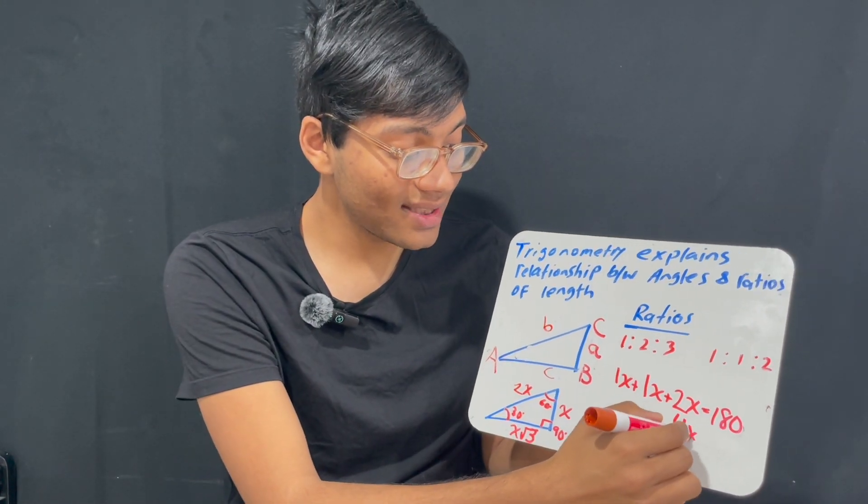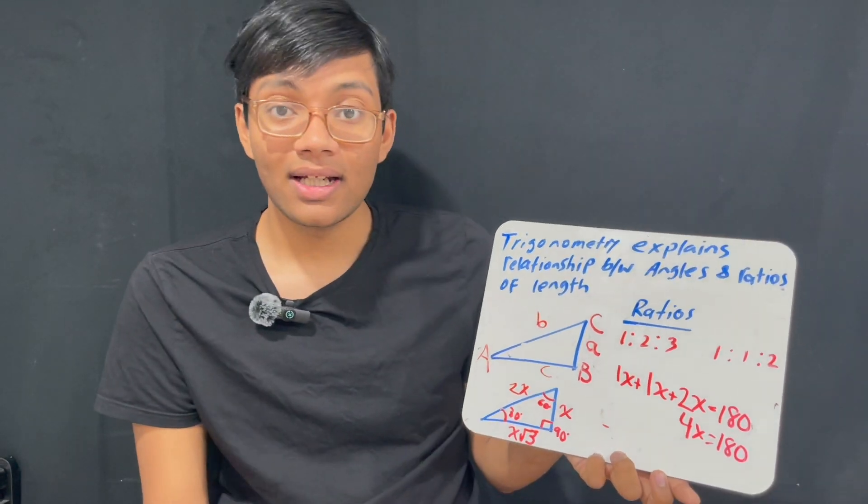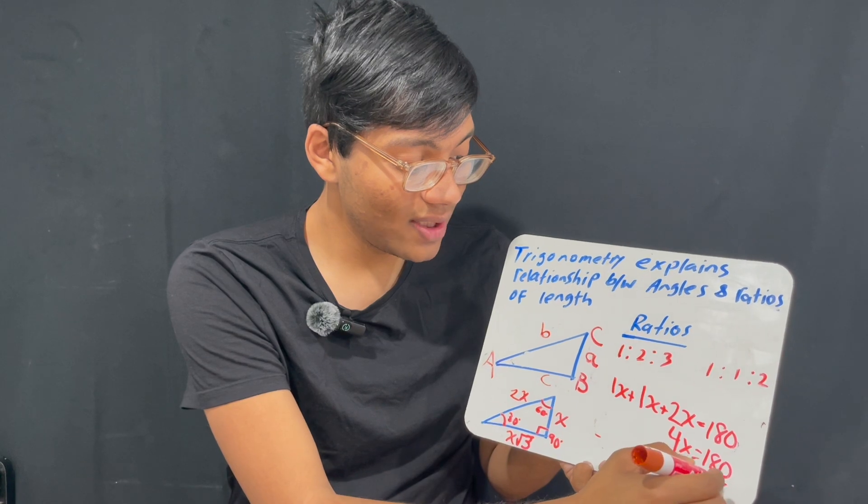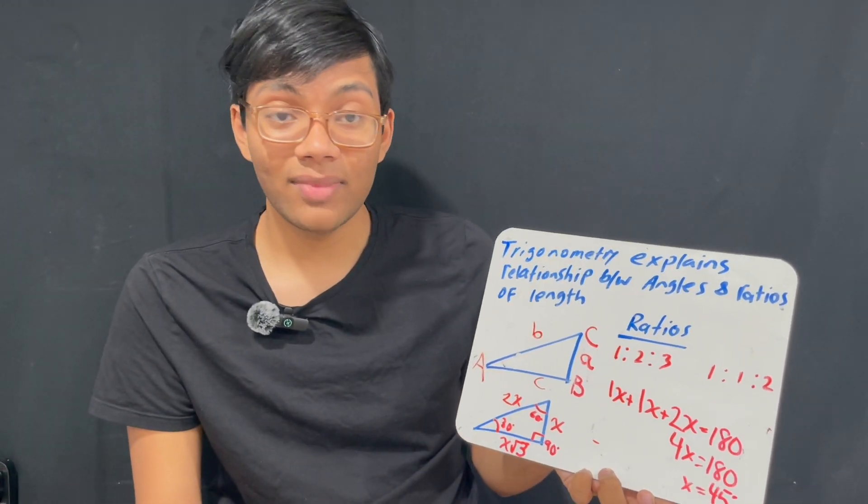So, 4x is equal to 180. Now, to solve for x, I just divide both sides by 4, which gives me 45 degrees. What does that mean?